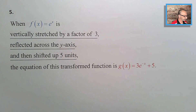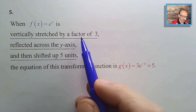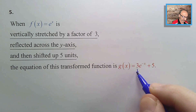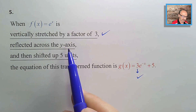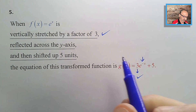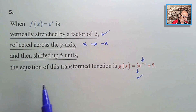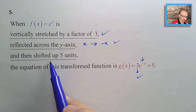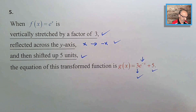Number five: when f(x) = e^x is vertically stretched by a factor of 3, reflected across the y-axis (x is replaced with −x), and then shifted up 5 units — all of which are true — the statement is true.